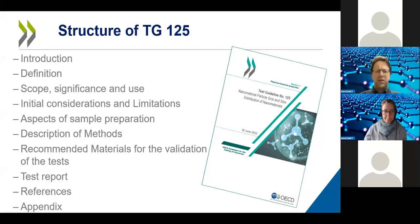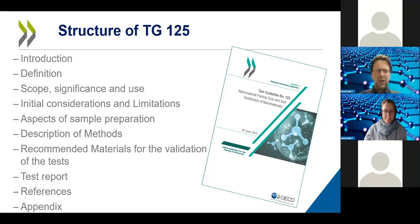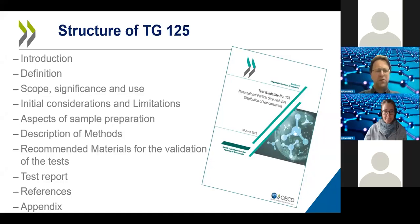Looking at the structure of TG 125: it starts with an introduction, followed by a definitions section — noting there was quite some discussion on definitions from ISO, different OECD member countries, and different communities, so the definitions here specifically refer to terminology used within this test guideline. Then we have scope and use, initial considerations and limitations, sample preparation aspects, description of methods, and recommended materials for validation, followed by the test report, references, and appendix.